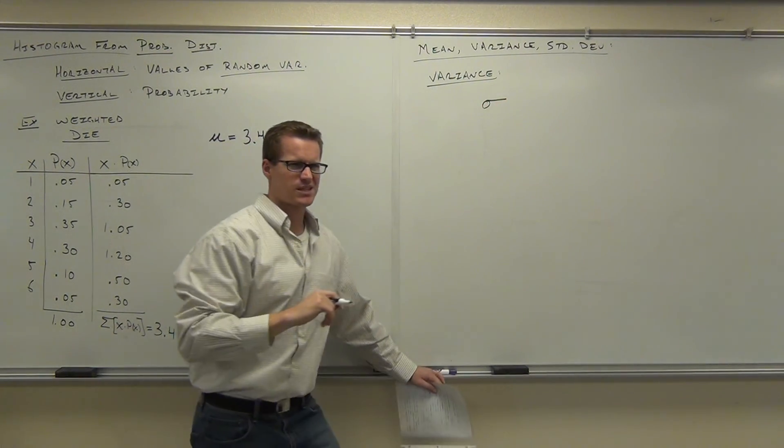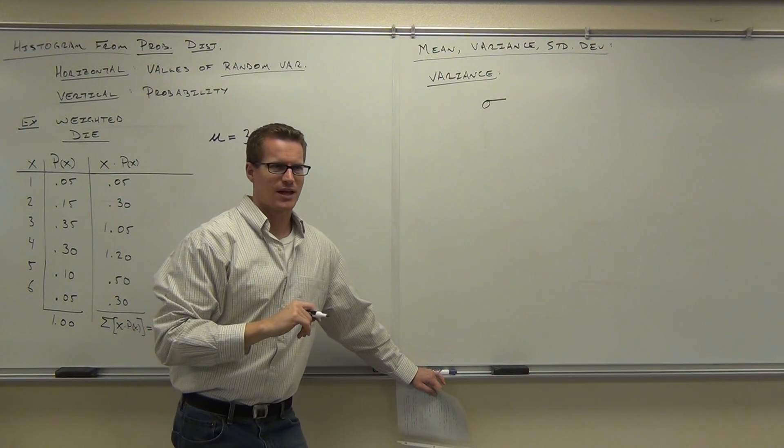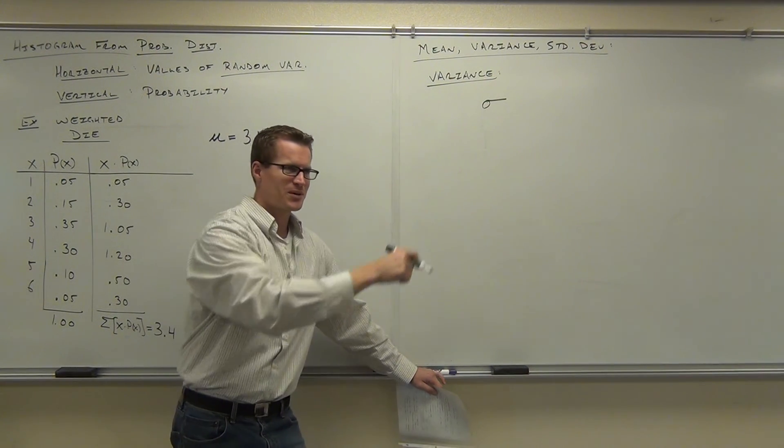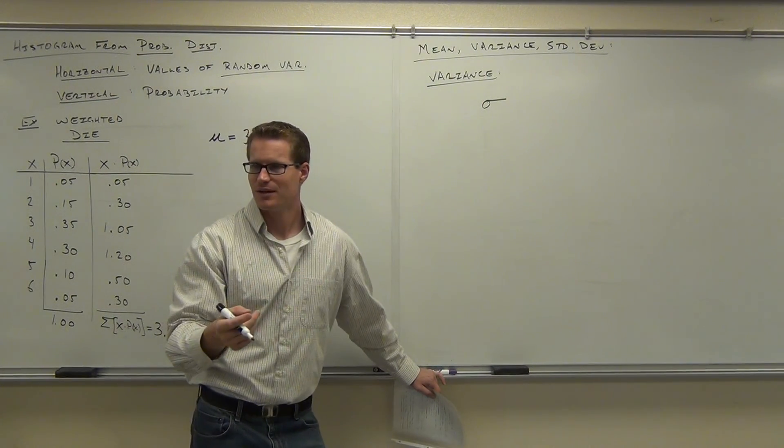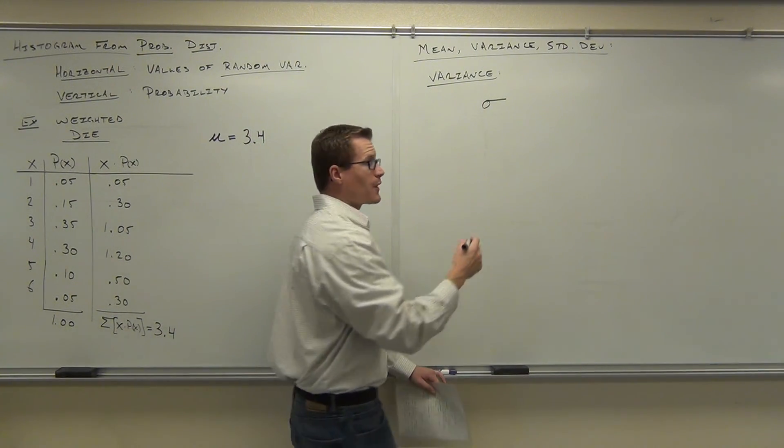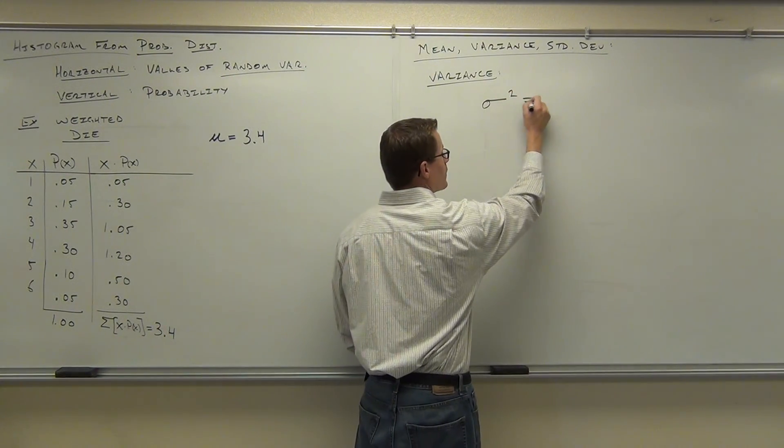Remember that symbol? What's that symbol? Little cannon thing. Sigma. Yeah, very good. Sigma or little cannon thing. We're going to go with sigma. Yeah, this is lowercase sigma. For variance, we had squared. That was a symbol for variance.